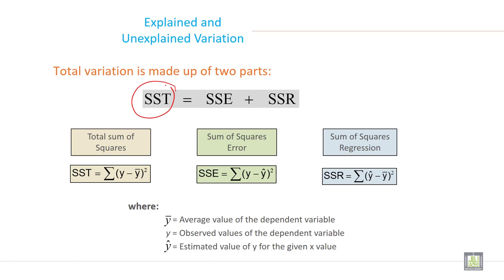This is total variation, this is explained variation, and this is unexplained variation - SSE and SSR. SST is the total sum of squares.